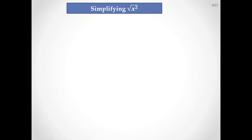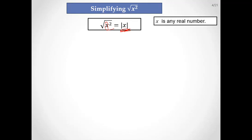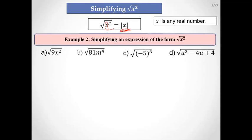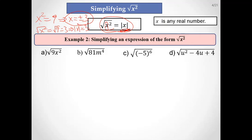Let's see how to simplify the square root of x squared. No matter what x is, the square root of x squared is always the absolute value of x. This explains why when solving an equation like x² = 9, taking the square root of both sides gives |x| = 3, so x equals plus or minus 3.